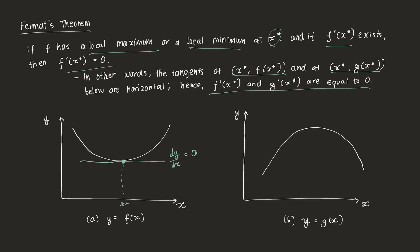For the other example with g(x), we have a point x* at the maximum. If I draw a tangent line at the maximum point, the slope of that line is equal to zero, which means g'(x*) = 0 — or equivalently, dy/dx = 0. So that's Fermat's Theorem. There are exceptions, such as when you cannot differentiate the function, but that's for another time.